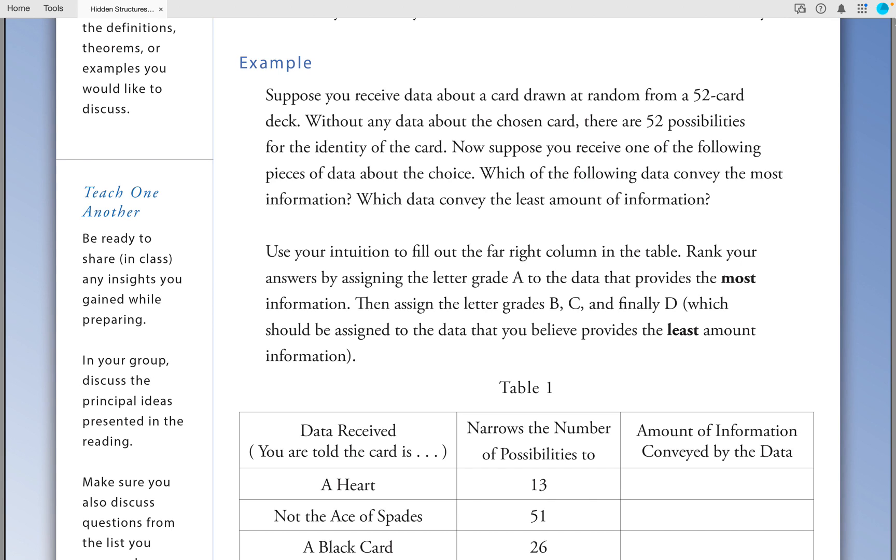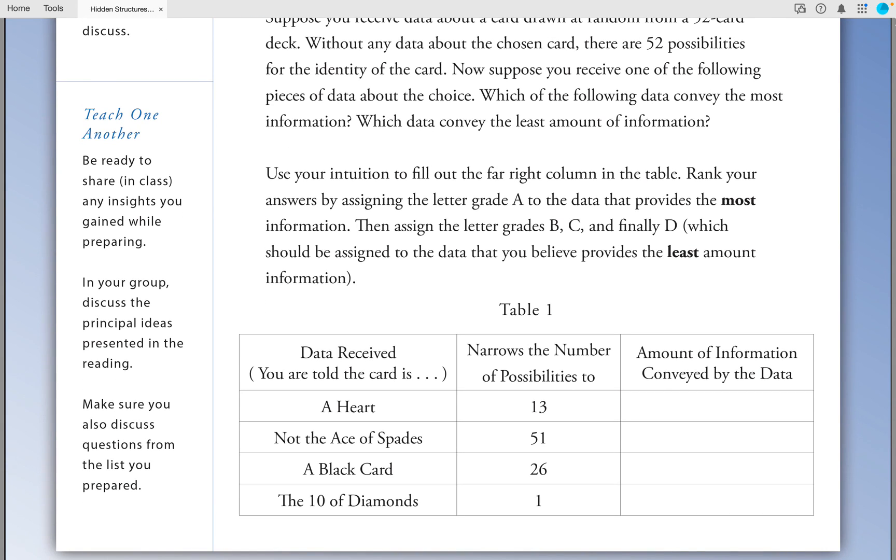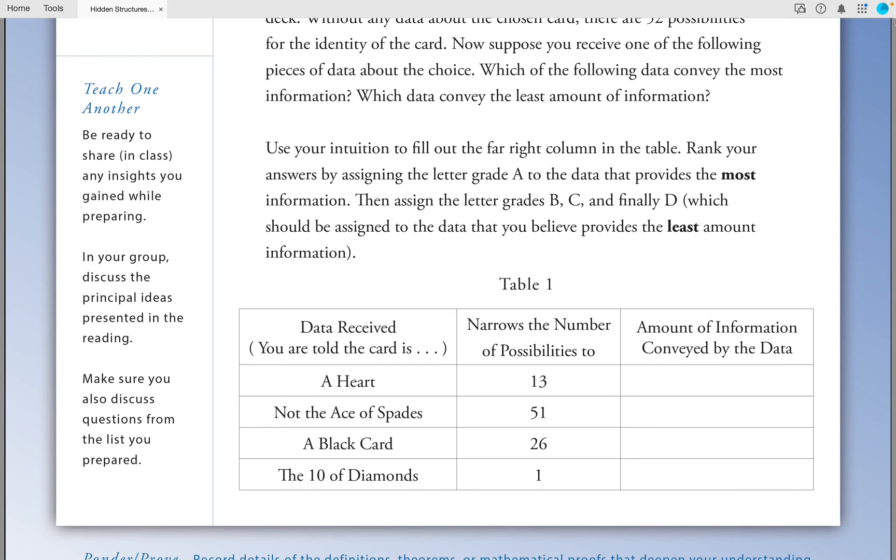Use your intuition to fill out the far right column in the table. Rank your answers by assigning the letter A to the data that provides the most information. Then assign the letter B, C, and D, which should be assigned to the data that you believe provides the least amount of information.